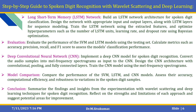For the deep convolutional neural network CNN, implement a deep CNN model for spoken digit recognition and convert audio samples into mel-frequency spectrograms. Design a CNN or RNN architecture with convolutional, pooling, and fully connected layers, then train the CNN model using mel-frequency spectrograms. For model comparison, compare the performance of SVM, LSTM, CNN, and RNN models, assessing their accuracy, computational efficiency, and robustness to variations in the spoken digit samples. Finally, summarize the findings from the experimentation with wavelet scattering and deep learning techniques for spoken digit recognition, reflecting on the strengths and limitations of each approach and suggesting potential areas for improvement.